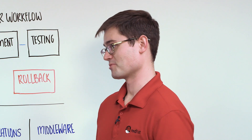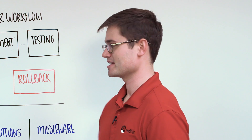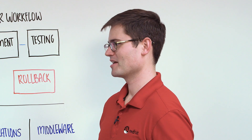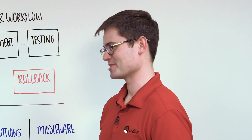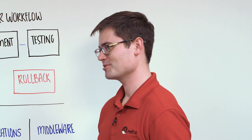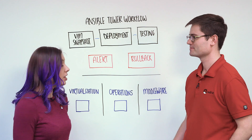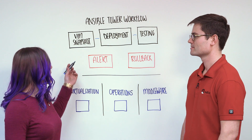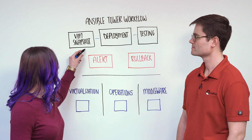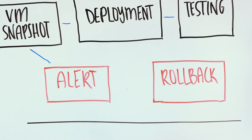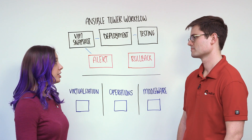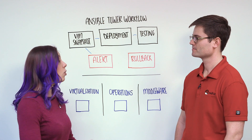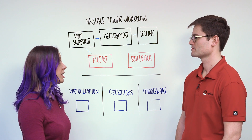That sounds great, and it seems like we're saving a bunch of people on these teams a lot of time. But I've been around long enough to know that sometimes things don't always go as planned and we reach failures. How do workflows handle those failure cases? That's the great thing about workflows. If something happens in capturing the snapshot, you can trigger a workflow to send an alert to your virtualization team that says we're creating this fix, or maybe it's a manual intervention that's needed.